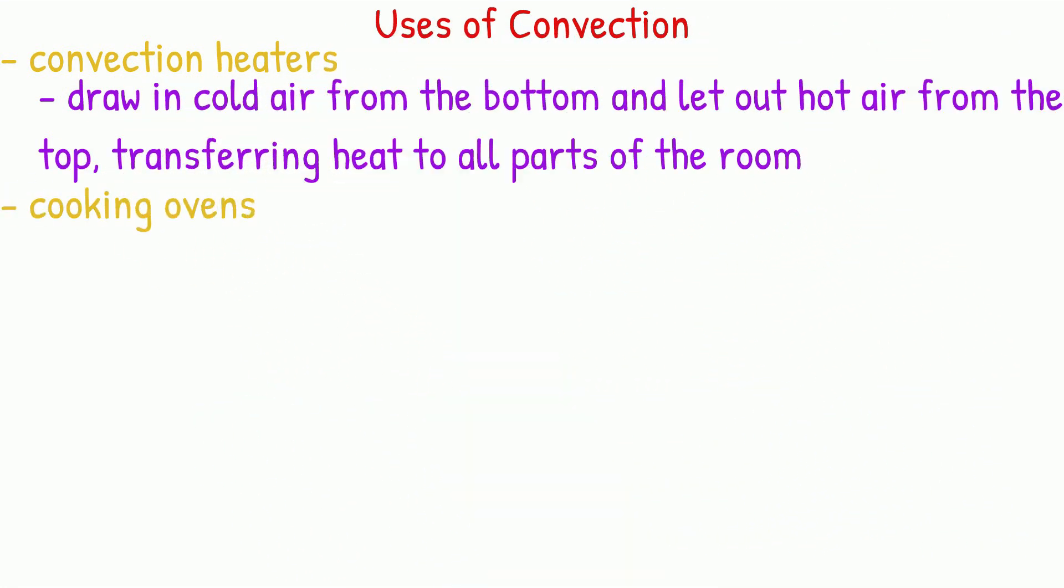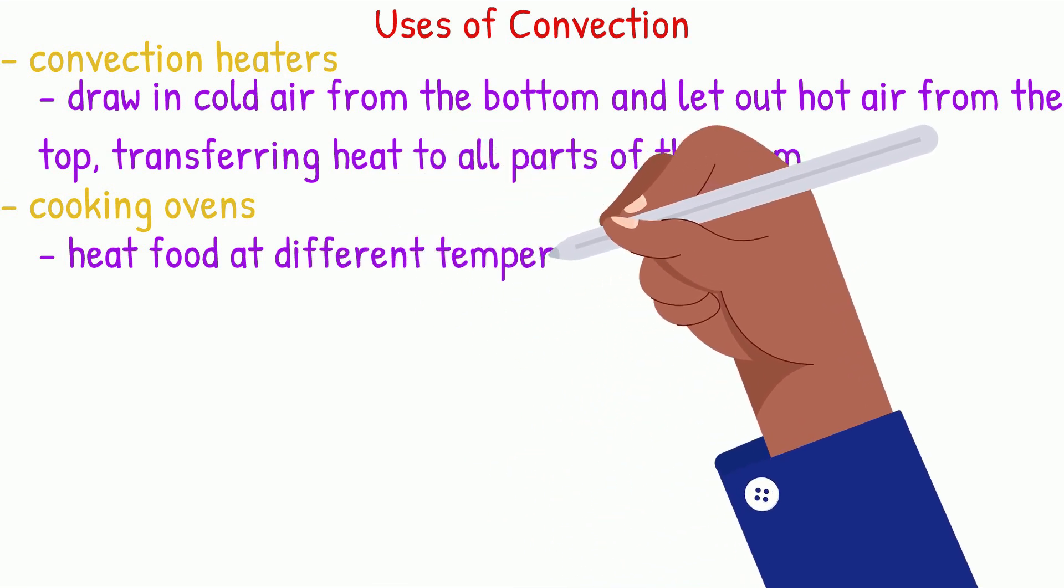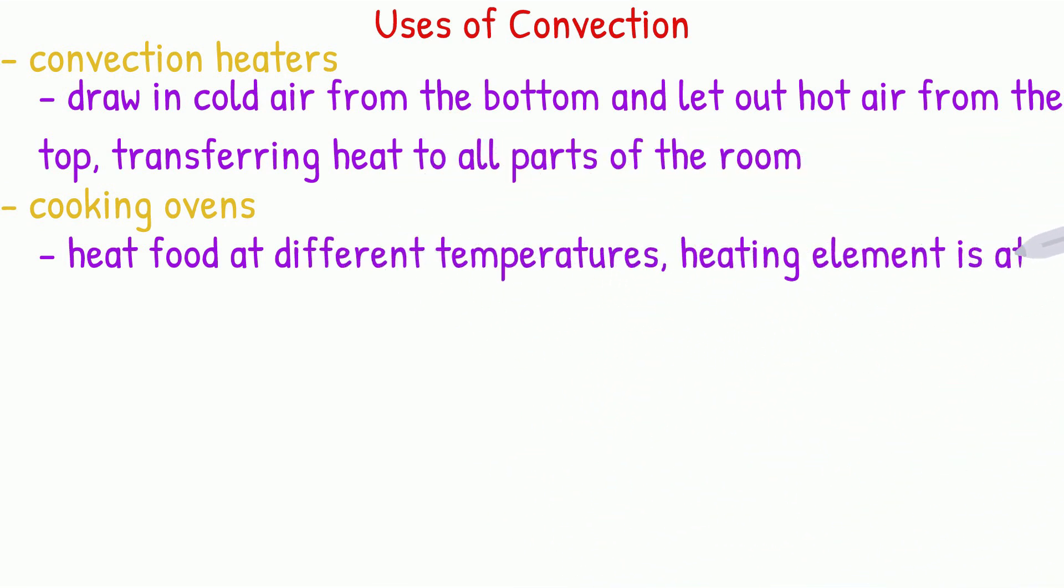Cooking ovens use convection to be able to heat foods at different temperatures. The oven's heating element is at the bottom, so warm air rises due to convection.